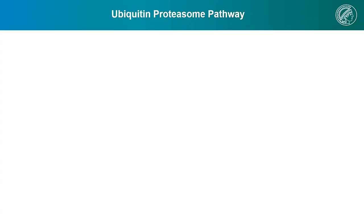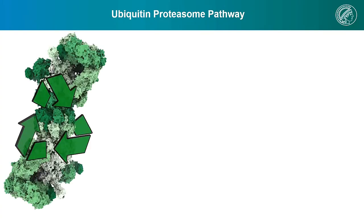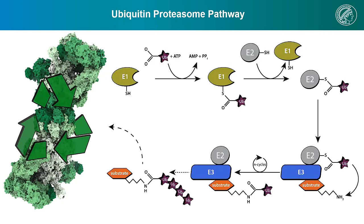And this is the job of the proteasome. The proteasome is arguably the most important machinery for polypeptide recycling in human cells. It is part of the ubiquitin proteasome pathway, which involves several enzymes that take part in it.